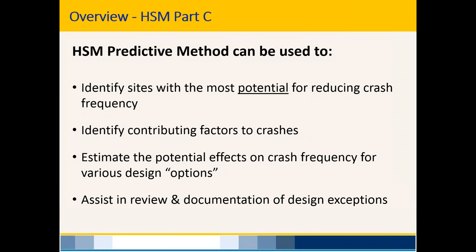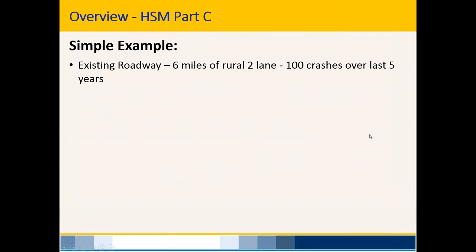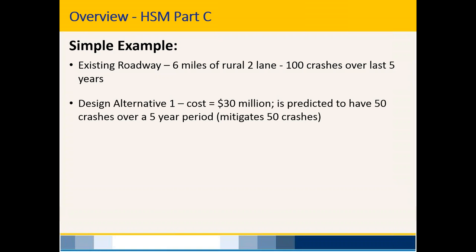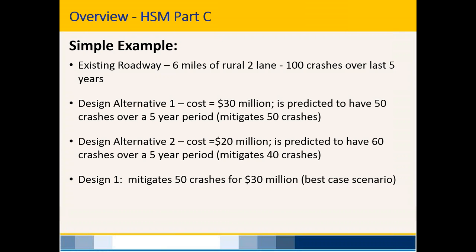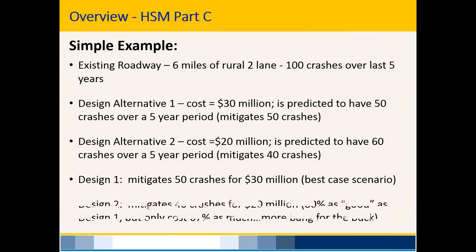For the comparative design uses, don't get too caught up in the actual predicted crash numbers. What's important is comparing predicted crashes of one design alternative versus another and how those differences relate to cost. For example: an existing six-mile rural two-lane roadway has had 100 crashes in five years. After narrowing options due to right-of-way, environmental, and public opinion constraints, we're down to two design alternatives.